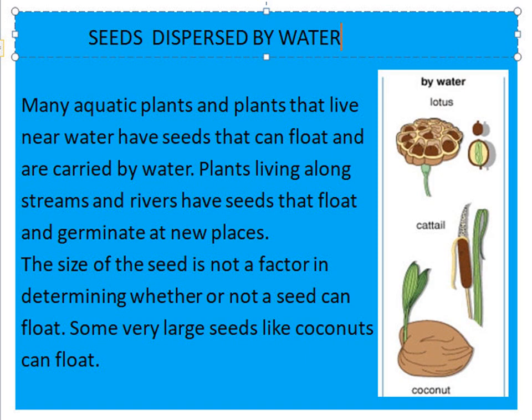Seeds dispersed by water. Many aquatic plants and plants that live near water have seeds that can float and are carried by water. Plants living along streams and rivers have seeds that float and germinate at new places. The size of the seed is not a factor in determining whether or not a seed can float — some seeds are very large like coconuts, but they can also float.